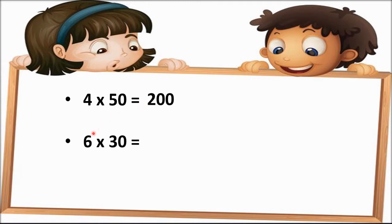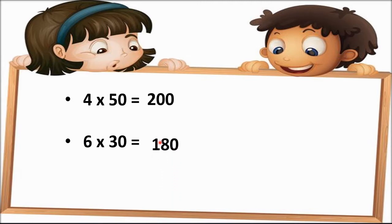Next is 6 into 30, that is 6 multiplied by 30. So first we are going to multiply 6 into 0. Students, as we always start from the units place. So 6 zeros are 0, and 6 threes are 18. So our answer is 180.